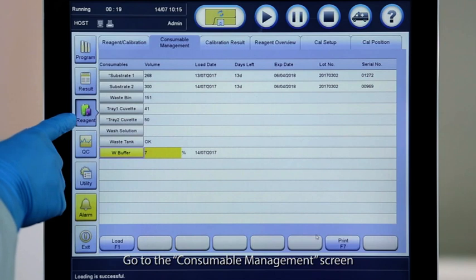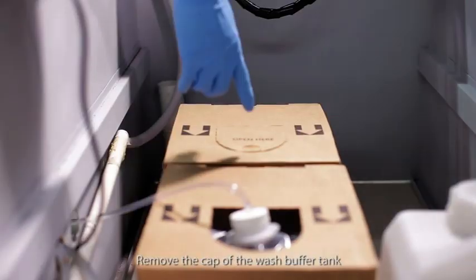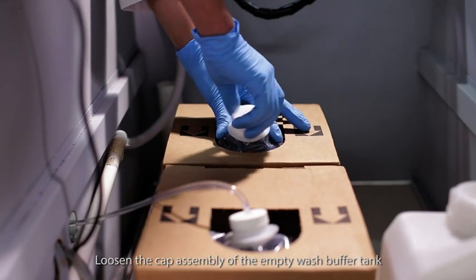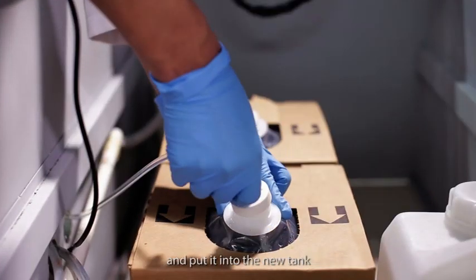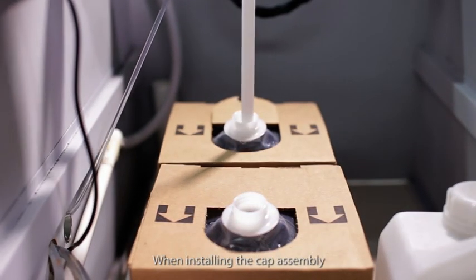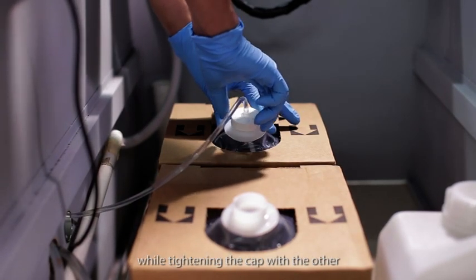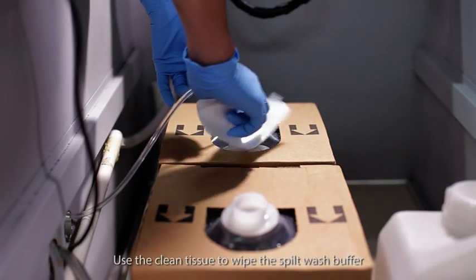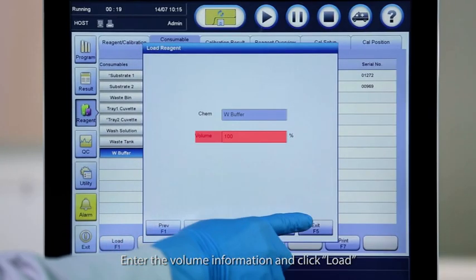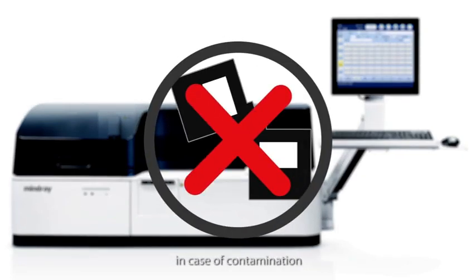Go to the consumable management screen. Open the reagent load screen of wash buffer. Remove the cap of the wash buffer tank. Loosen the cap assembly of the empty wash buffer tank and put it into the new tank. Do not contaminate the cap assembly. When installing the cap assembly, lift the tank mouth with one hand while tightening the cap with the other. Use a clean tissue to wipe the spilt wash buffer. Enter the volume information and click load. Do not pool the dead volume of the wash buffer in case of contamination.